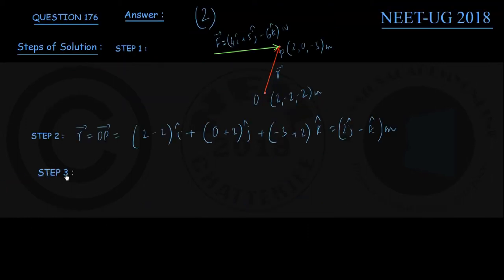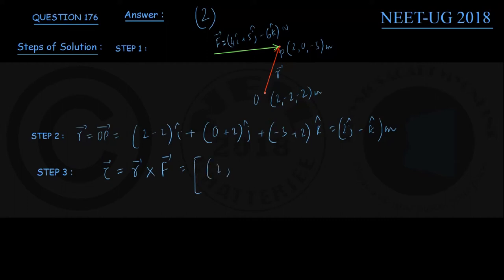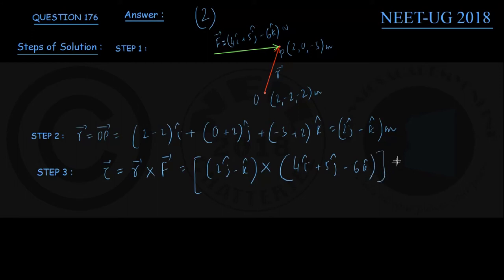In the next step, we recall the formula for moment of a force about an origin. The moment or torque, symbol τ (vector), equals the cross product R cross F. The order of multiplication is R cross F. So we write: R = (2j − k) cross F = (4i + 5j − 6k), with the unit newton-meter outside the brackets. Unit of force is newton, unit of R is meter, so torque is in newton-meters.